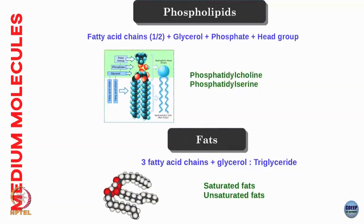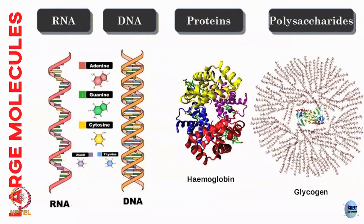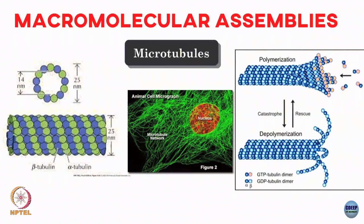Fats, or triglycerides, are three fatty acid chains plus glycerol. Depending on whether you have double or single bonds you get unsaturated or saturated fats. Macromolecules include RNA, DNA, proteins, and polysaccharides like glycogen. The difference between RNA and DNA is that in RNA, thymine is replaced by uracil.